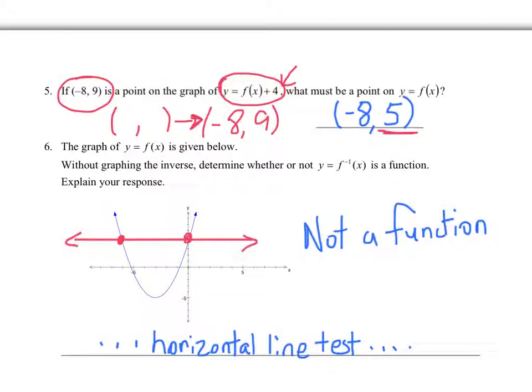The graph of y equals f of x is given below. Without graphing the inverse, determine whether or not it's a function. Explain the reasoning. The answer is not a function. And the reasoning is right here in this line that I drew, which is called a horizontal line. And you see that the horizontal line intersects two different times. And so we can conclude, therefore, that this fails what's called the horizontal line test. So in your explanation, you need to use the word horizontal line test somewhere to explain that that's why it's not a function.